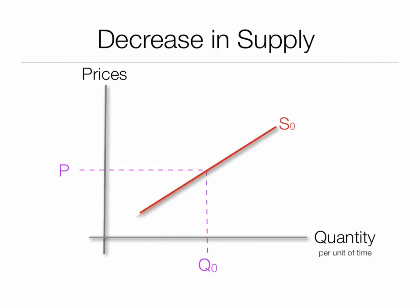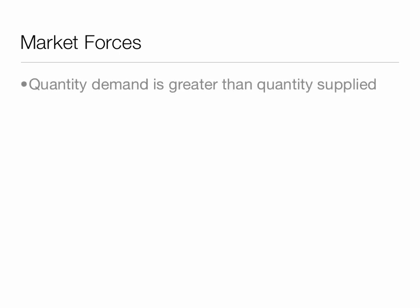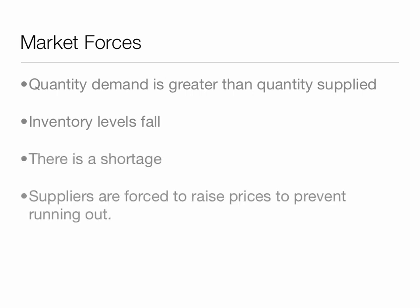Let's look at this without the demand curve so you can see a little easier. There's been a decrease in supply — it moves to the left. At the same price, less quantity will be produced. In this case, quantity demanded is greater than quantity supplied. Those are the market forces we're referring to. Inventory levels fall. There's a shortage. Suppliers are forced to raise prices to prevent running out. This is what happens when supply decreases.